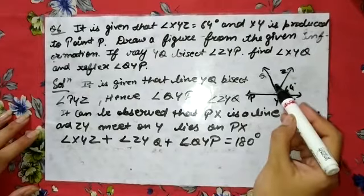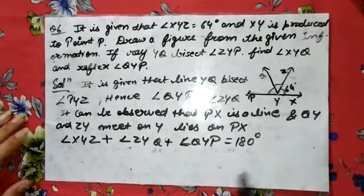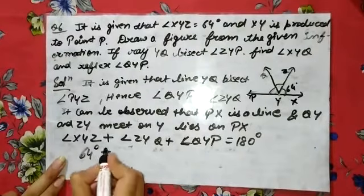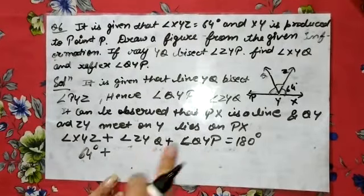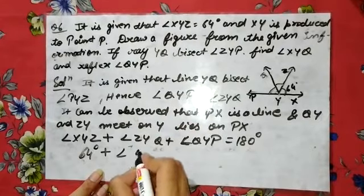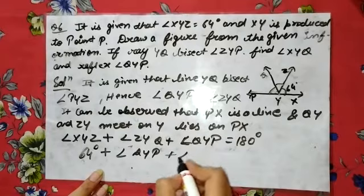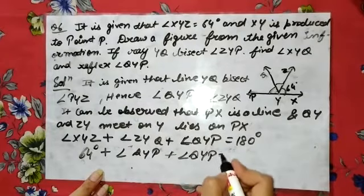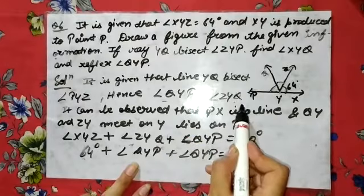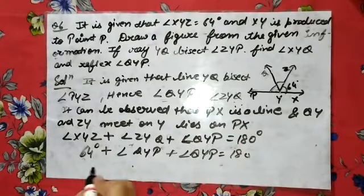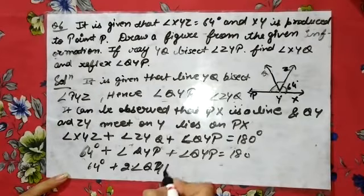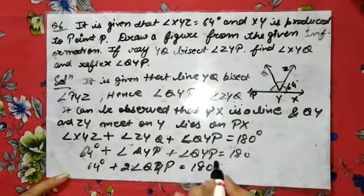The sum of all three angles equals 180 degrees. Angle XYZ is given as 64 degrees. Since ZYQ and QYP are equal, I substitute ZYQ with QYP. So: 64 degrees plus 2 × angle QYP equals 180 degrees.